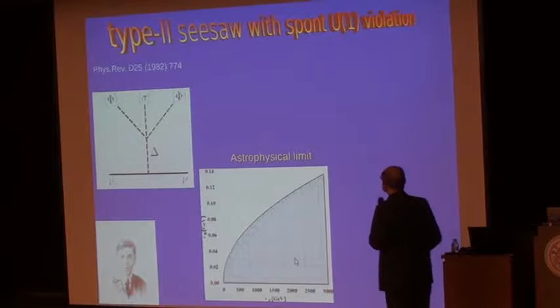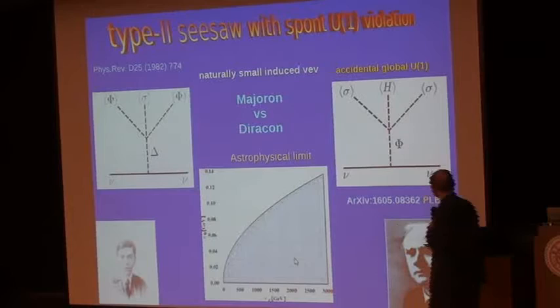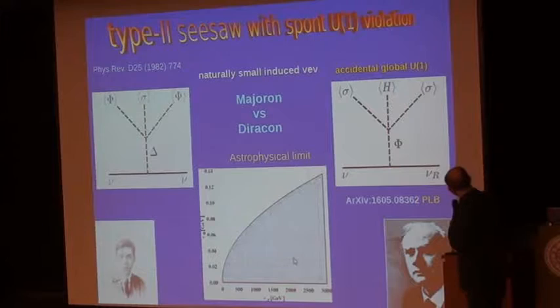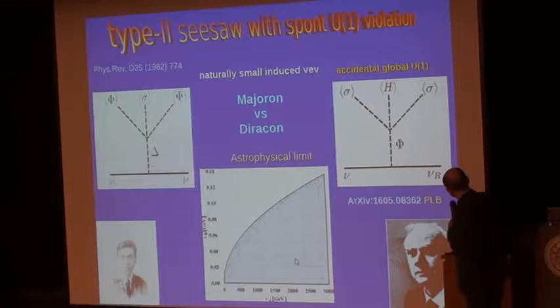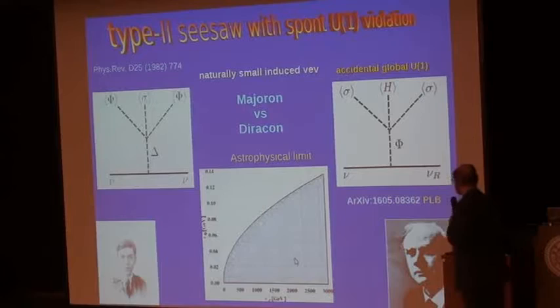So all this is archaeology, but what is surprising is that it took 35 years to do the same for the Dirac counterpart. And in fact, the Majoron now has a brother, which is the Dirac-on, and there is a way to induce small Dirac neutrino masses, connecting isodoublet to iso-singlet, through this induced naturally small expectation value, and neutrino masses are protected by some accidental global lepton symmetry. So there is a complete parallel between Majorana and Dirac descriptions.